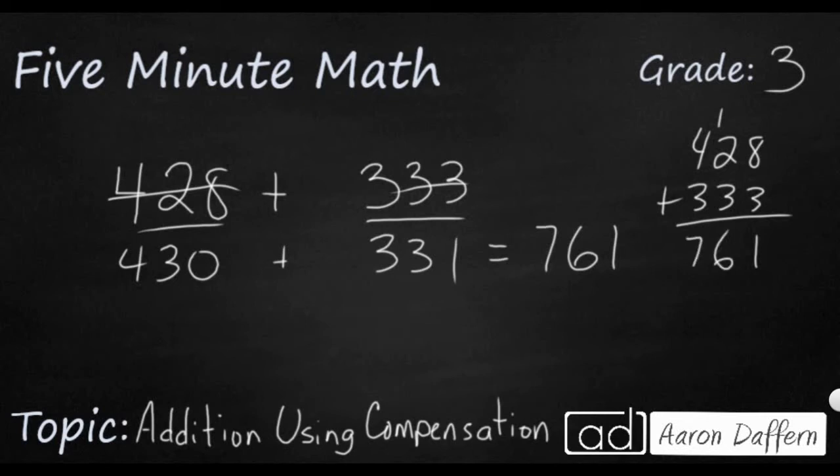So compensation says you can rearrange the quantity between one or both of the addends to make it a little bit easier to add mentally. As long as you don't get rid of any of the quantity or add any additional quantity, that's going to change your sum. I just shifted it a little bit from this 333 over to my 428. Let's look at a different example.